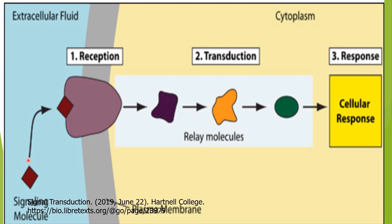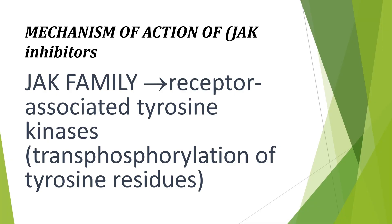This is a simple diagram showing signal transduction. We have a receptor in the cell membrane, and when this receptor is attached to its signaling molecule, we have transduction inside the cell through relay molecules, which then go to the nucleus where they give the cellular response. We have three stages: reception of the stimulus, transduction, and response. JAK family are receptor-associated tyrosine kinases.